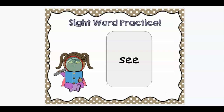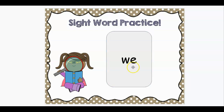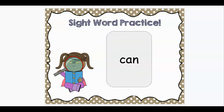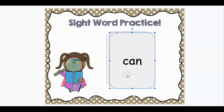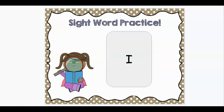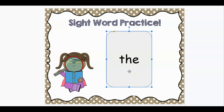All right, let's look at those sight words. Who remembers this word? See. Good job. What's this one? We. Good. What's this word say? The. Nice job. What's this one? Can. And the last one? I. Great job. Let's do these one more time: I, can, the, we, see. Great job.